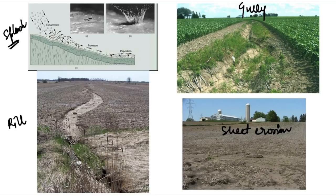Next is rill erosion. As you can see in this picture, the small channel formed due to water runoff is known as a rill, and the soil eroded through this process is known as rill erosion. This rill or channel can be approximately 0.3 meters deep.